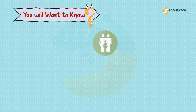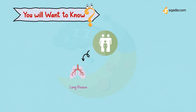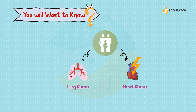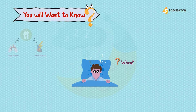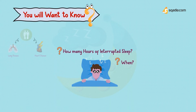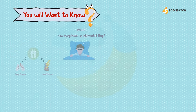You'll want to know if he or anyone in his family has had any of these conditions: lung disease or heart disease. You will also want to know when he began to have trouble sleeping and how many hours of interrupted sleep he typically gets each night.